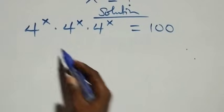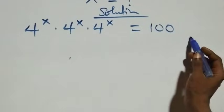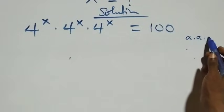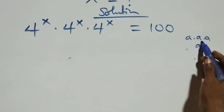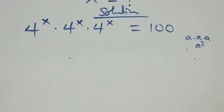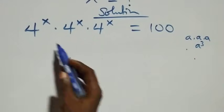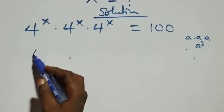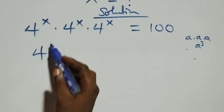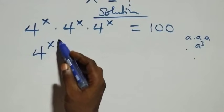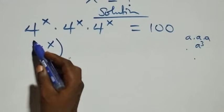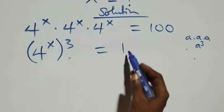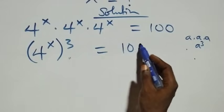This follows from the rule that a times a times a can be written as a raised to power 3. Similarly, we have the same base multiplying, so we can write it as 4 raised to power x, then raised to power 3, equals to 100.